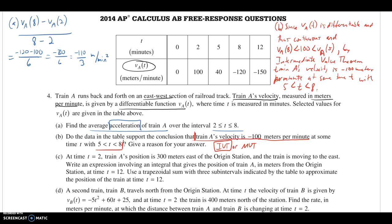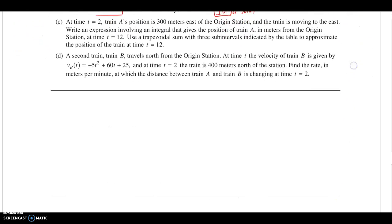We're a little under 6 minutes right now, so about 9 minutes if we're trying to time ourselves for the test. Let's see if we get these last two parts in those 9 minutes. Looking to part C. At time T equals 2, train A's position is 300 meters east of this origin station. 300 meters east of the origin, and it's continuing to move east. We want to write an expression involving an integral for the position of train A at time 12. And then we're actually going to use a trapezoidal sum with three subintervals to actually approximate the position at 12. The big thing is getting this integral right.